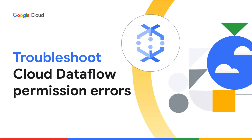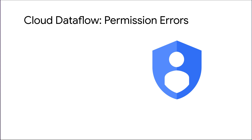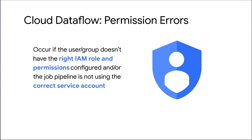Often forgotten and never given enough credit, roles and permissions are essential to running Dataflow jobs, yet can cause issues when not set up properly. Today, we will walk through troubleshooting common permission errors observed during creation and execution of Dataflow jobs. In Google Cloud Dataflow, permission errors occur if the user or group does not have the right IAM role and permissions configured, or the job pipeline is not using the correct service account.